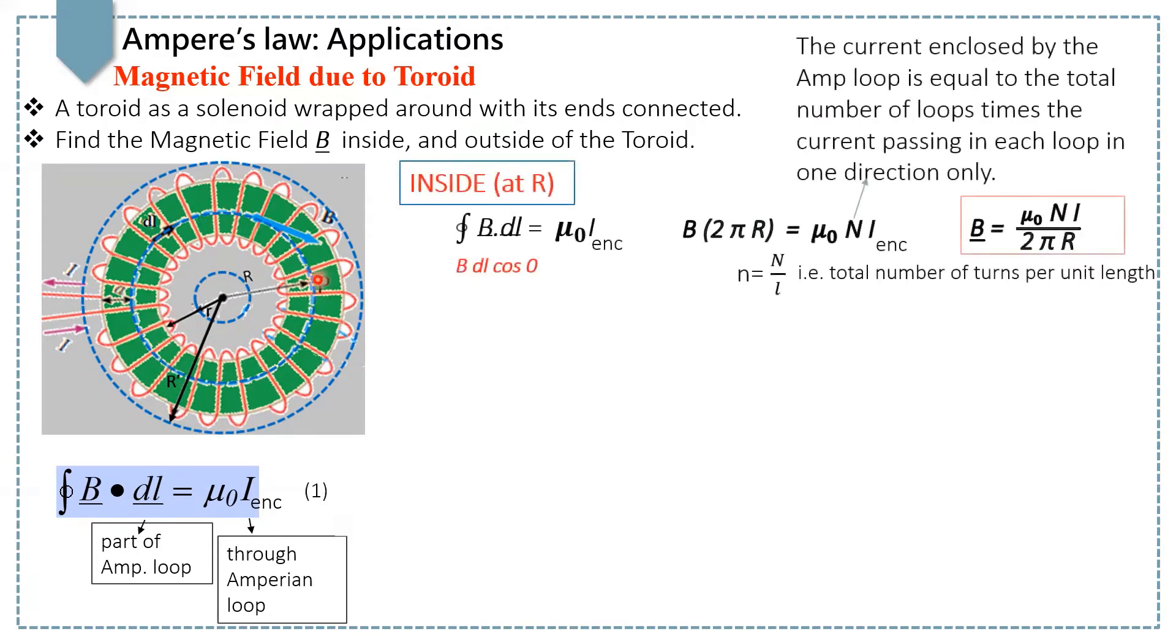To find the magnetic field at point P at a distance R from the center, we apply Ampere's law, and that is closed integral B dot dL equals mu naught I enclosed. By taking the Amperian loop that is passing through point P in a circle form, this Amperian loop is along the magnetic field inside of the toroid. Hence, there is a 0 degree angle between the magnetic field and the loop.